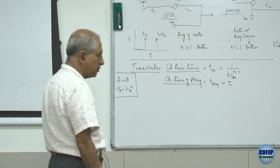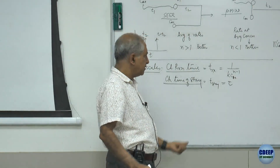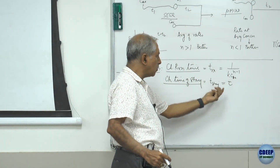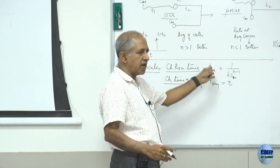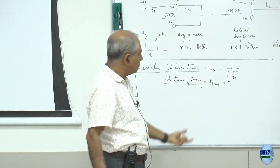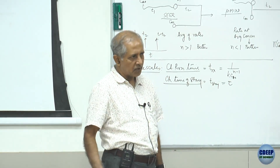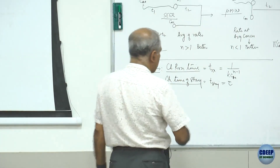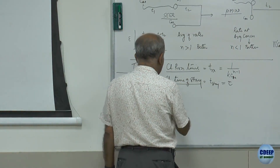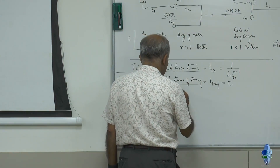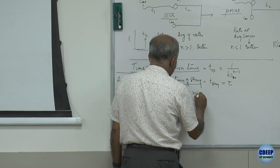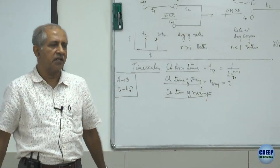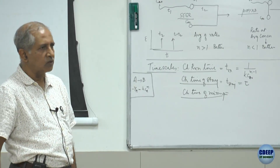When we talk about Damköhler number, we are comparing these two: the reaction is asking for a certain time, and you are giving the reaction a certain time. If what you are giving the reaction is much smaller than what the reaction requires, you will not get a high conversion. If you are giving more time than required, you will get high conversion. The third important time scale in considerations of mixing is the characteristic time of mixing, which is a function of the vessel design — the agitator type, how fast the agitator is rotating, and so on.